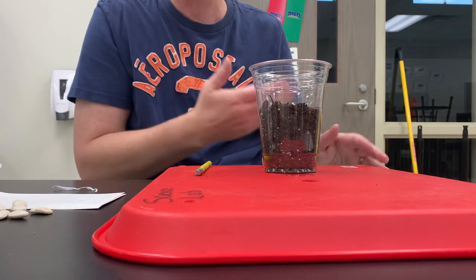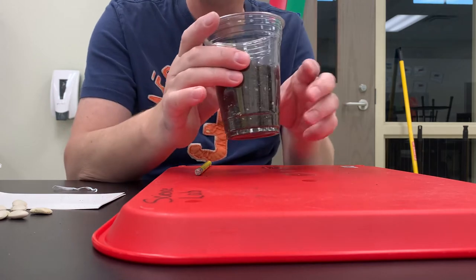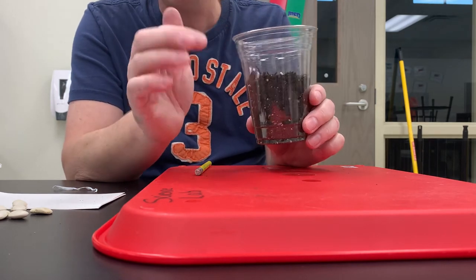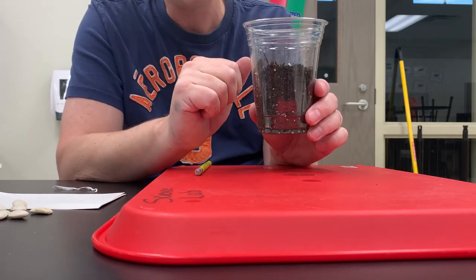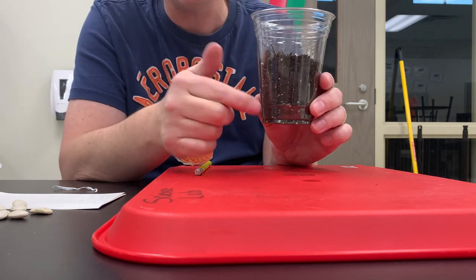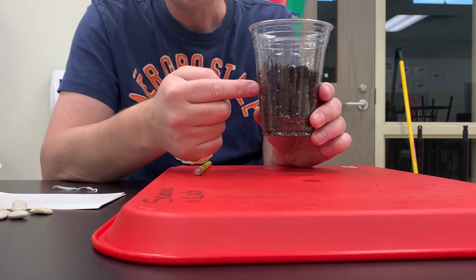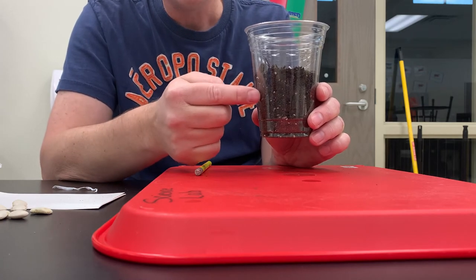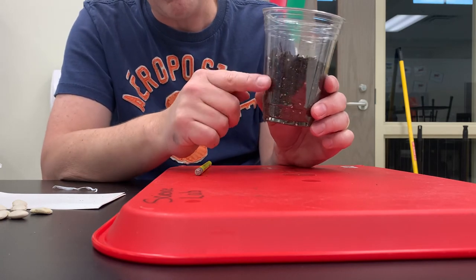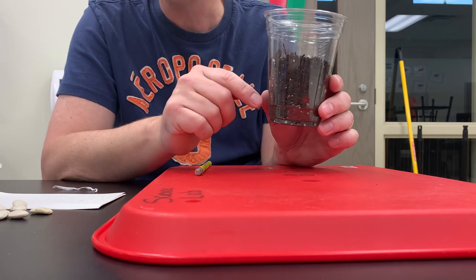After you're at this point, you can put a little water in there. Not too much, you don't want to drown your seed and then it won't grow. Just put enough water in there to make the soil damp.